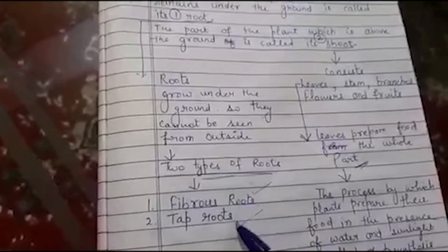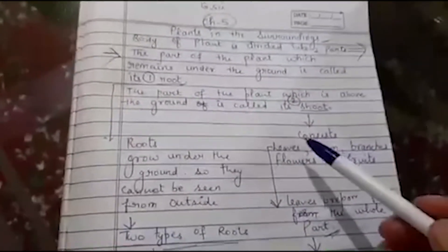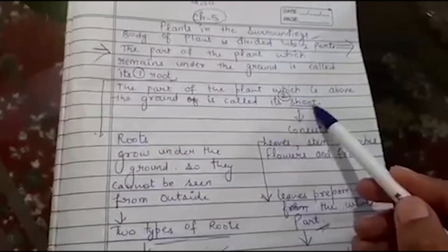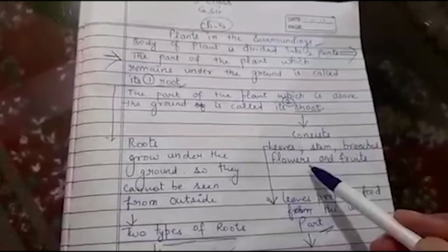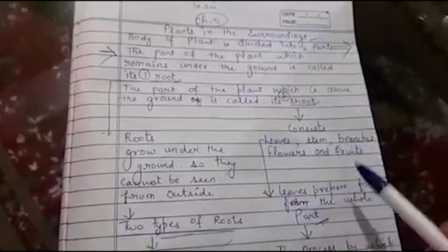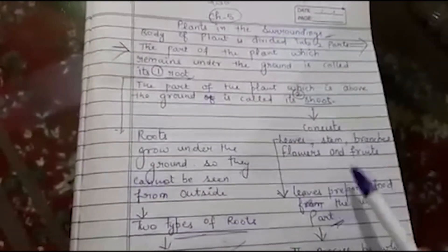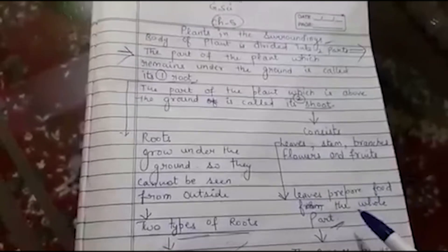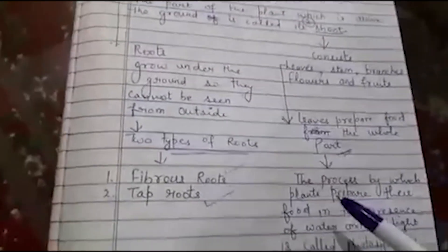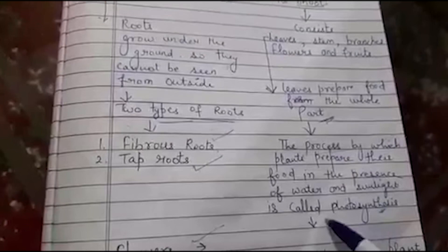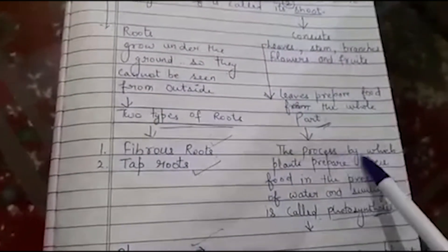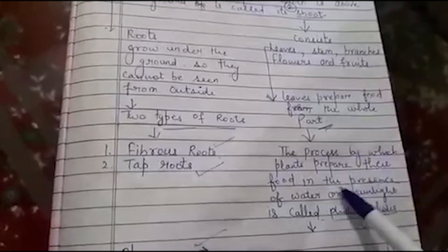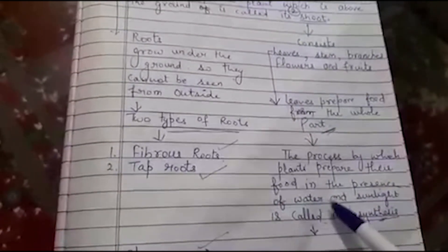The first type is fibrous roots and the second is tap roots. The shoot consists of leaves, stem, branches, flowers, and fruits. Leaves prepare food for the whole plant. What is the process of photosynthesis? It is the process by which plants prepare their food in the presence of water and sunlight.